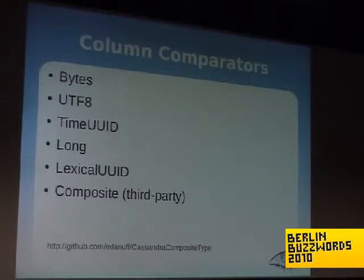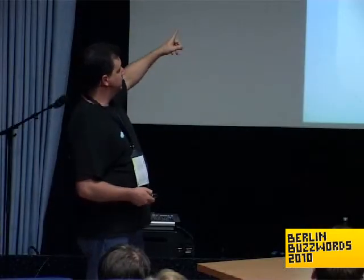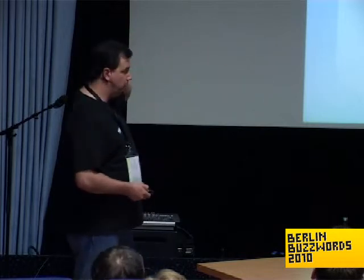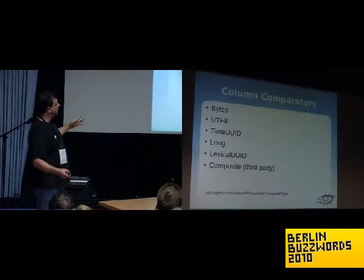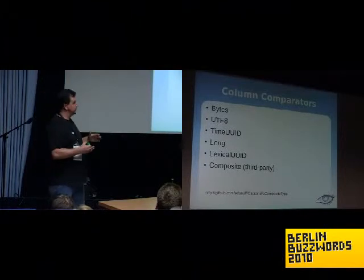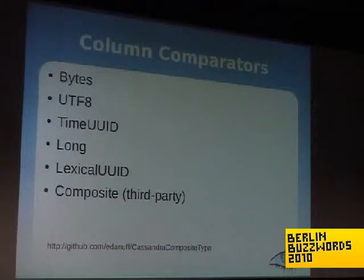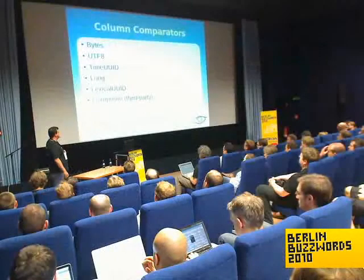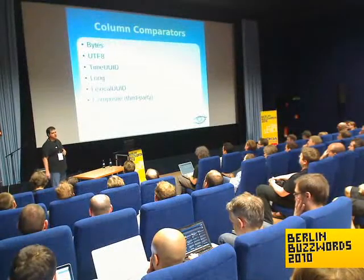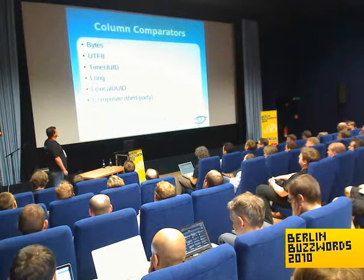As long as you construct column names as network byte order longs, it will sort them numerically and allow those predicates. Comparators are also pluggable — the composite type is an example someone wrote. It actually creates composite types by combining these other types in an arbitrary number, which essentially allows you to turn that flat namespace into a multidimensional data structure of arbitrary depth. It's a neat hack.